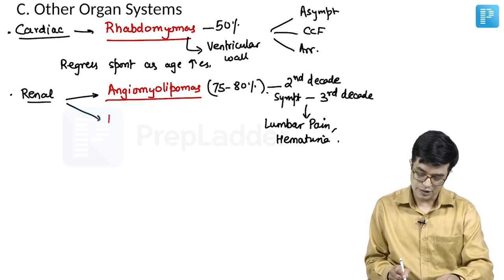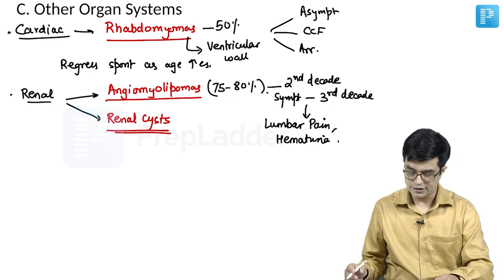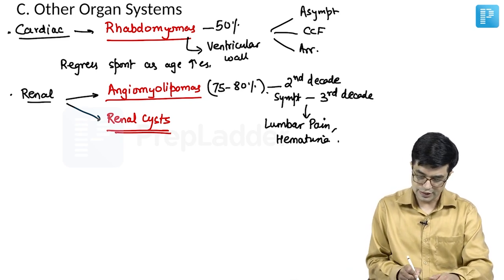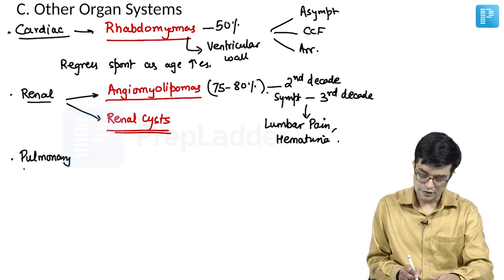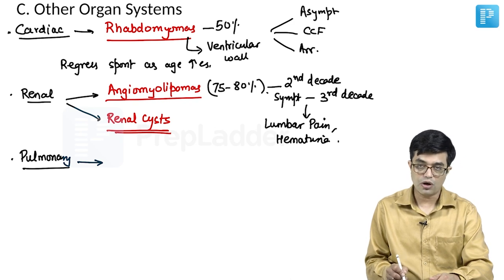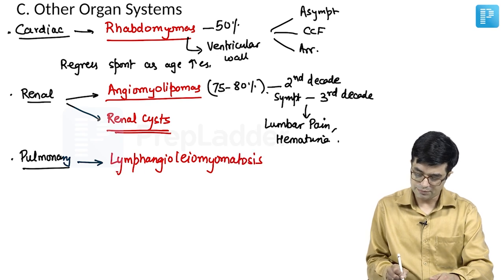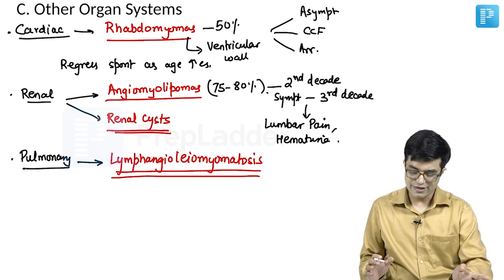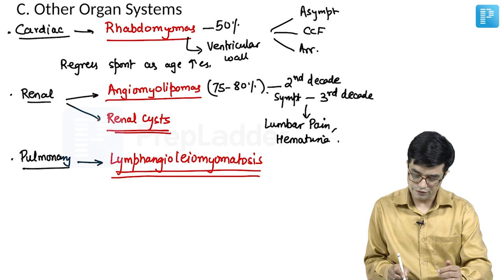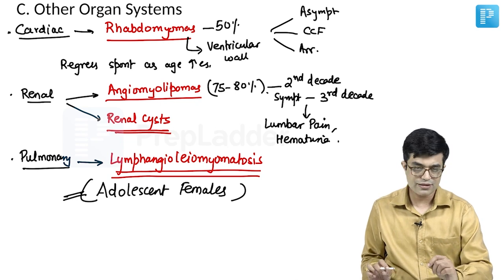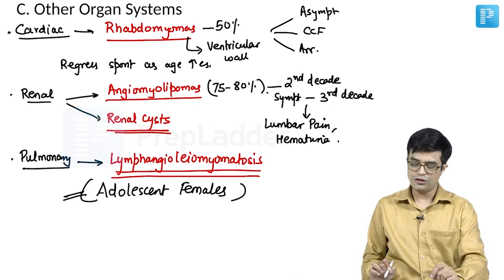The second form of renal involvement is benign renal cysts, which can be unilateral or bilateral. Both angiomyolipomas and renal cysts can be unilateral or bilateral. The classic pulmonary lesion is pulmonary lymphangioleiomyomatosis — a type of benign tumor containing lymphatic elements — which is very frequent in adolescent females, with males very rarely affected.